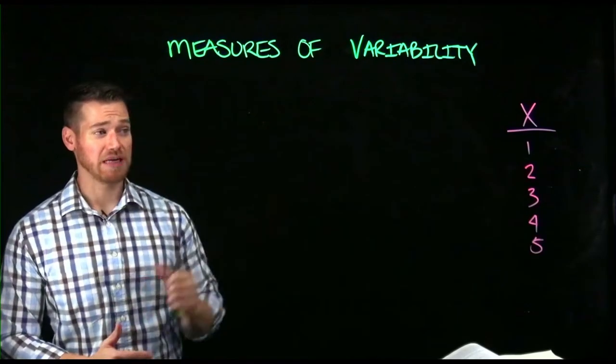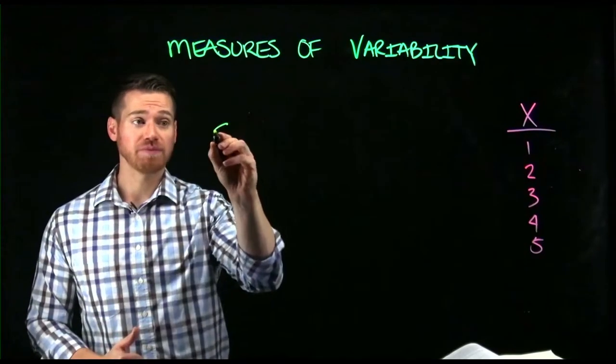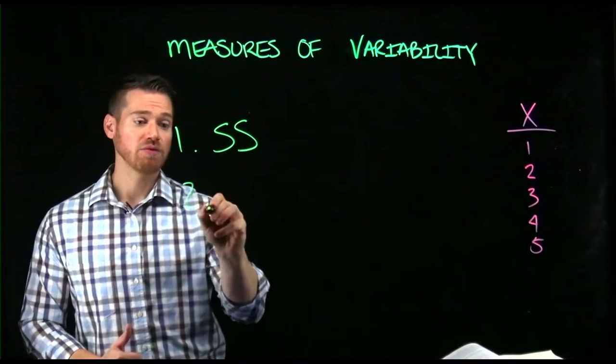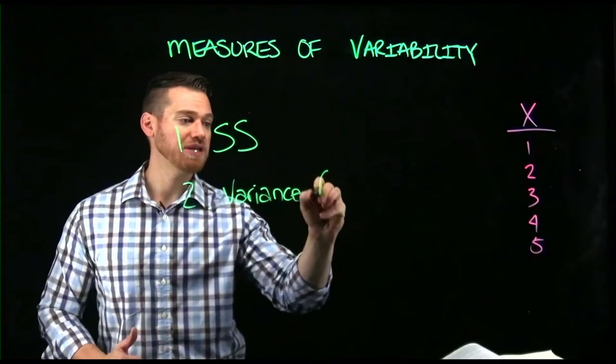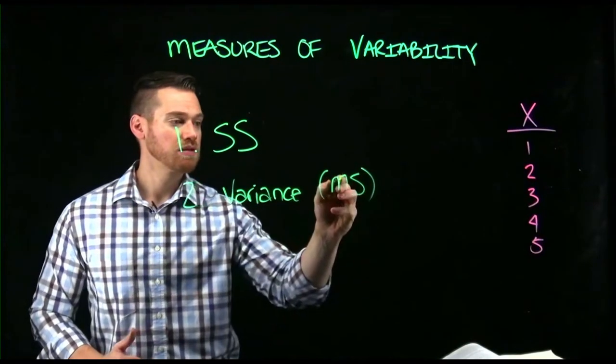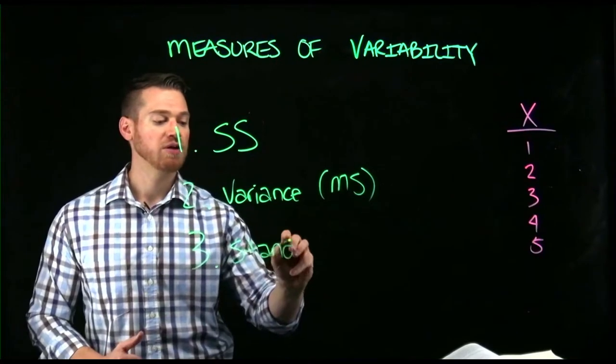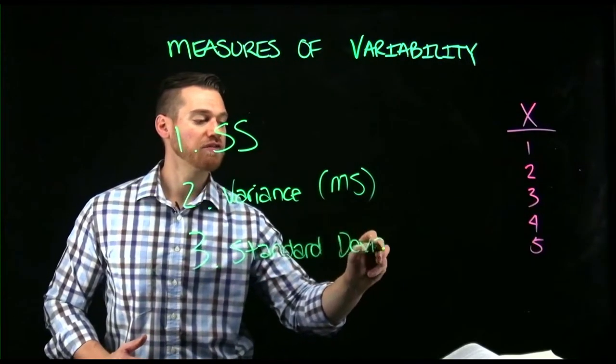So moving on to another type of variability, we have three measures that go together. The sum of squares, which you'll always get first, which can give you the variance, also the mean square, which can get you to the standard deviation, which is probably the most common and most interpretable measure of variability here.